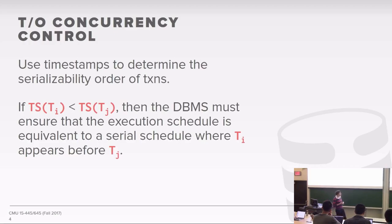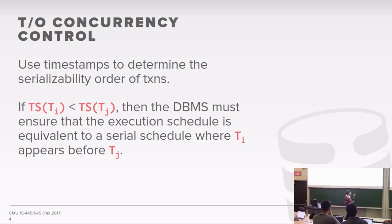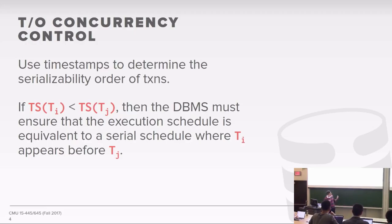We introduce a timestamp function TS: for a given transaction ID, we generate a unique timestamp. In our examples, T1 has timestamp 1. If TS(Ti) < TS(Tj), the serial order would have Ti executed first, followed by Tj. Timestamps are assigned on a per-transaction basis; a transaction can consist of one or more operations, so we don't need individual timestamps for individual steps — just for the transaction as a whole.